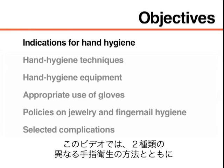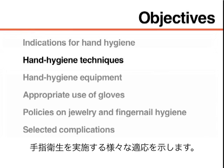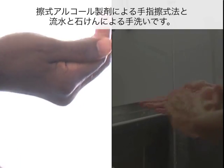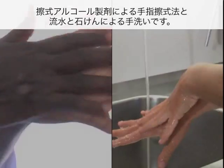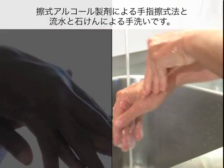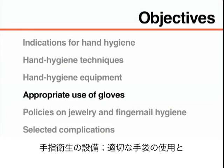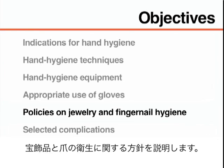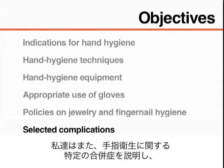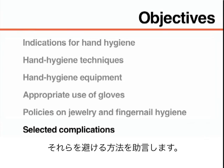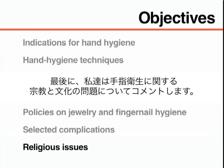This video will demonstrate the various indications to perform hand hygiene as well as two different hand hygiene techniques: hand rubbing with an alcohol-based hand rub formulation, and hand washing with soap and water. This video will also review hand hygiene equipment, the appropriate use of gloves, policies on jewelry and fingernail hygiene, selected complications associated with hand hygiene, and religious and cultural issues concerning hand hygiene.